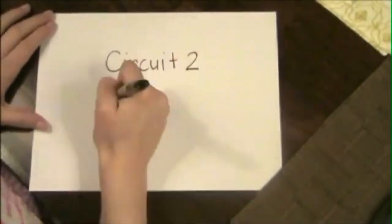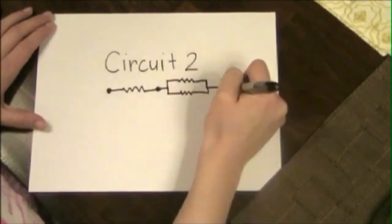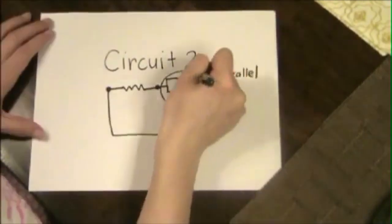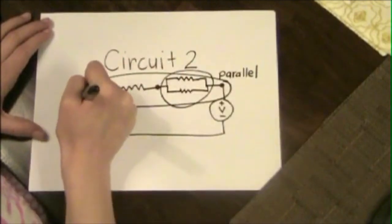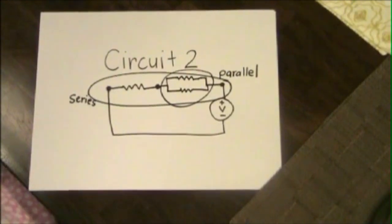For the second circuit we have a parallel component and a series component. The parallel part is on the right where there are two tubes each with a single resistor connected in parallel. And on the left we have a single tube with a single resistor just as before, and it is in series with the parallel circuit on the right.